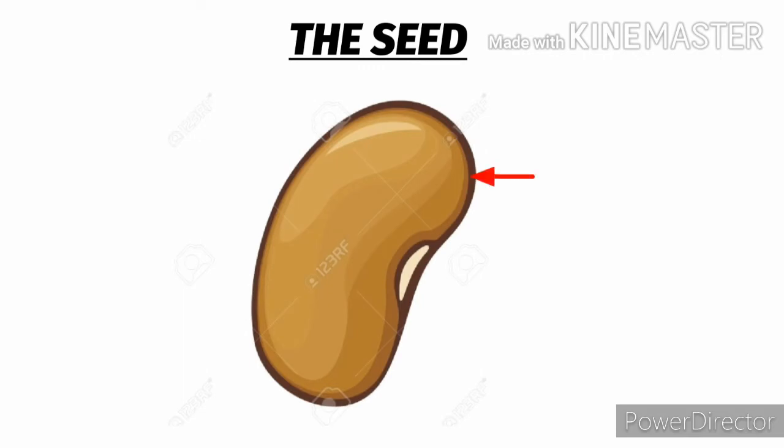The food for the baby plant is stored inside the seed. It is covered by a tough skin called the seed coat. The seed coat protects the baby plant and its food.